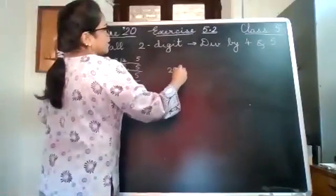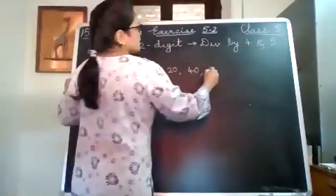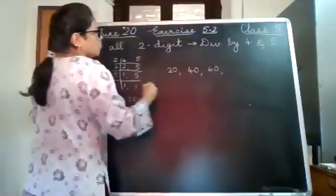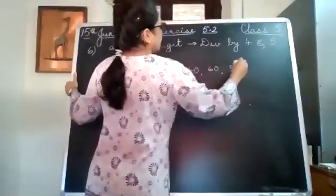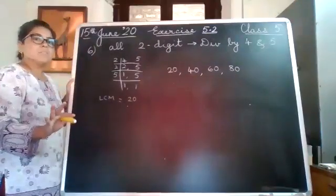2 times 1 is 20, 2 times 2 is 40, 2 times 3 is 60, 2 times 4 is 80. 2 times 5 is 100 but I am not interested in that because it becomes a 3 digit number.